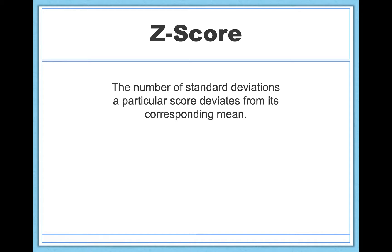The z-score automatically tells you how well you did compared to your peers, compared to everyone else taking the test. So if, for example, I told you that I got a z-score of positive 2 on the test, you would know that I did really well — I scored two standard deviations above the mean. If instead I told you I had a z-score of negative 1 on the test, you'd know that I scored slightly below average, one standard deviation below average.